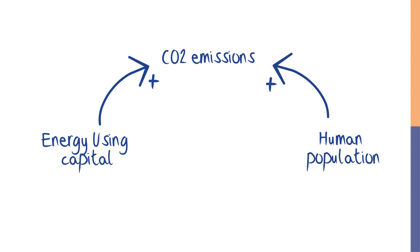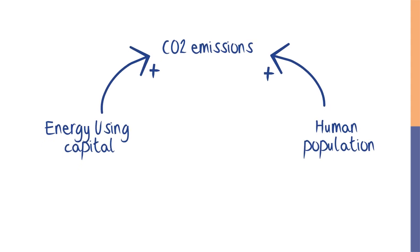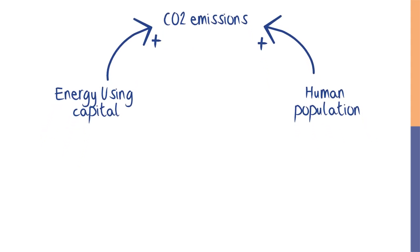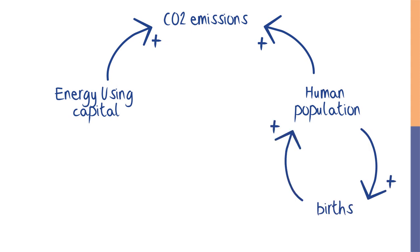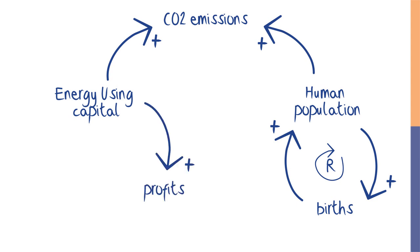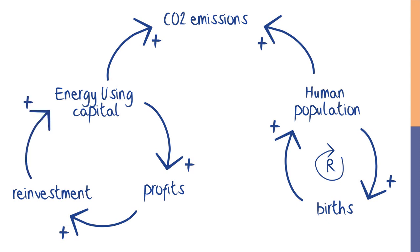Human population grows via exponential feedback: the larger the population, the more births, the larger the population. Similarly, the more energy-using capital, the more profits accrue. Some of these profits are reinvested in more energy-using capital, creating a second reinforcing feedback loop.